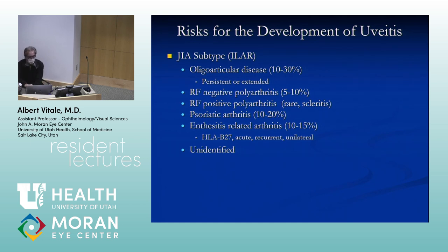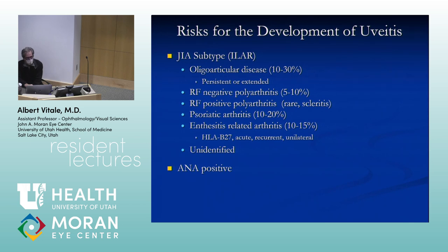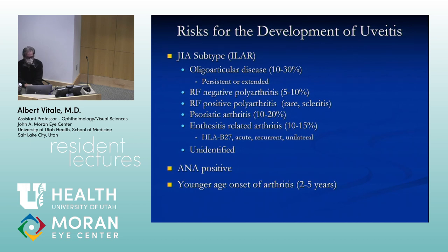Additional risk factors for uveitis in JIA include ANA positivity, young age at onset, female sex, and shorter duration from arthritis onset to uveitis. Average age of onset is about four years. There is also an HLA genetic association. These are board-question risk factors.